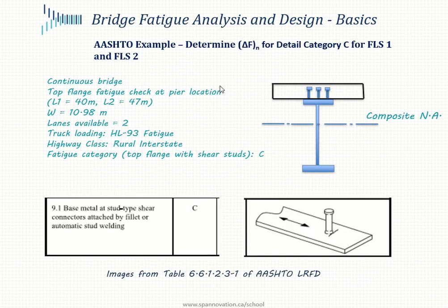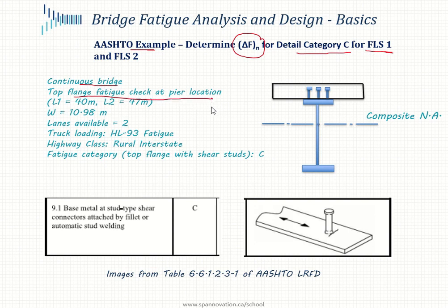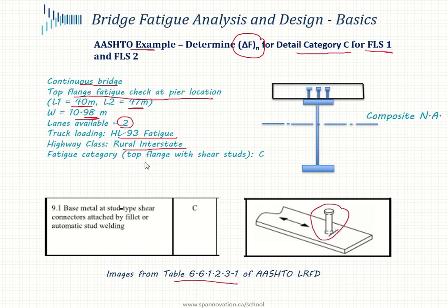Let's look at a quick example determining delta Fn for a detail category C for FLS 1 per AASHTO. This is a continuous bridge; we're checking the top flange at a pier location. It's a two-span continuous bridge with 40 and 47-meter spans, 10.98 meters wide, two lanes, HL-93 fatigue truck loading, rural interstate highway. When a stud is welded to a plate, the fatigue category per the AASHTO table is C.